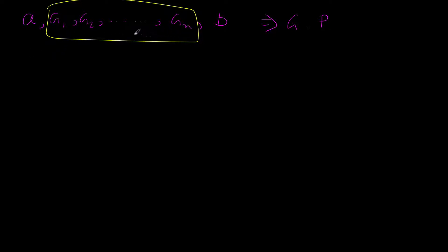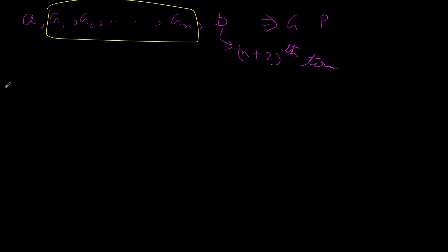Let's say this is a GP. We want to find these numbers G1 to Gn such that they form a geometric progression. We have our first term as A and our last term as B. We inserted n terms in between and had two terms already, so the last term B is the (n+2)th term. Therefore, we can write T_{n+2} equal to B, which gives us B = A times R to the power (n+2-1), that is AR to the power (n+1).